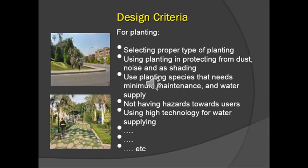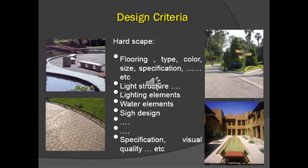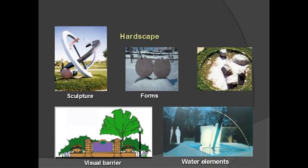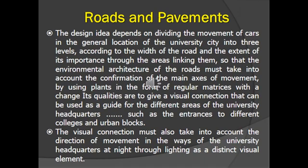In the design criteria, we focused on selecting the proper species for plants, as well as hardscape elements in terms of flooring design, lightweight structures, lighting elements, water elements, signage design, and so on. The phases of the project had been divided into five main phases. An important part was encouraging walkability — the design separates car movement from pedestrian walkability using defined paths, making circulation clear and safe for everyone.